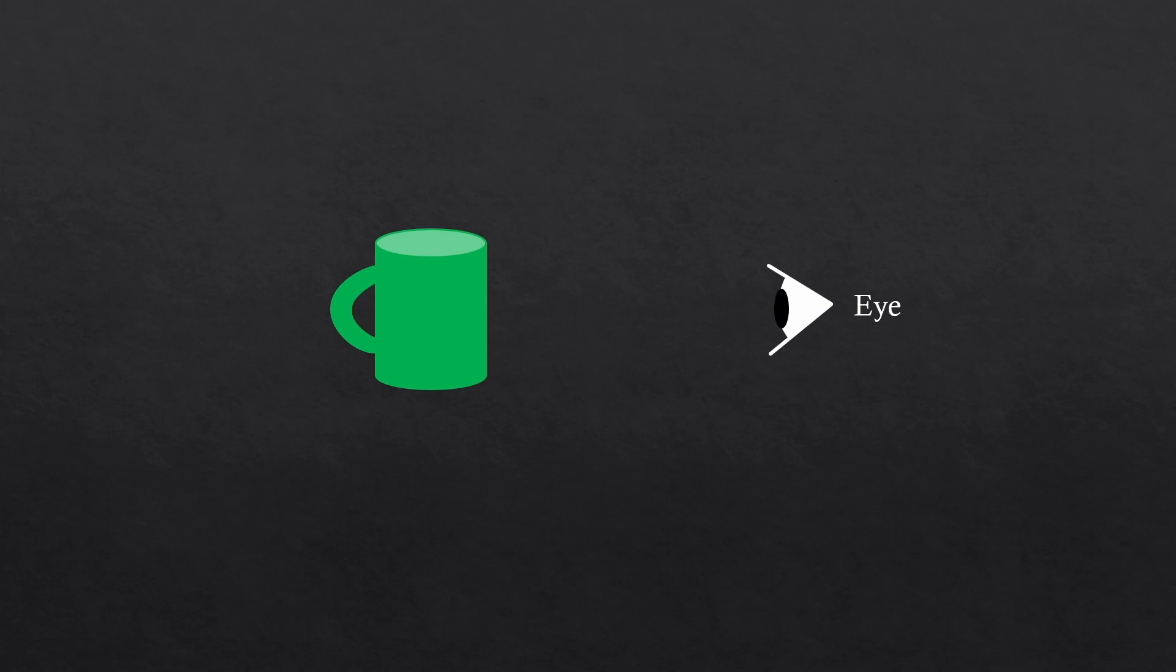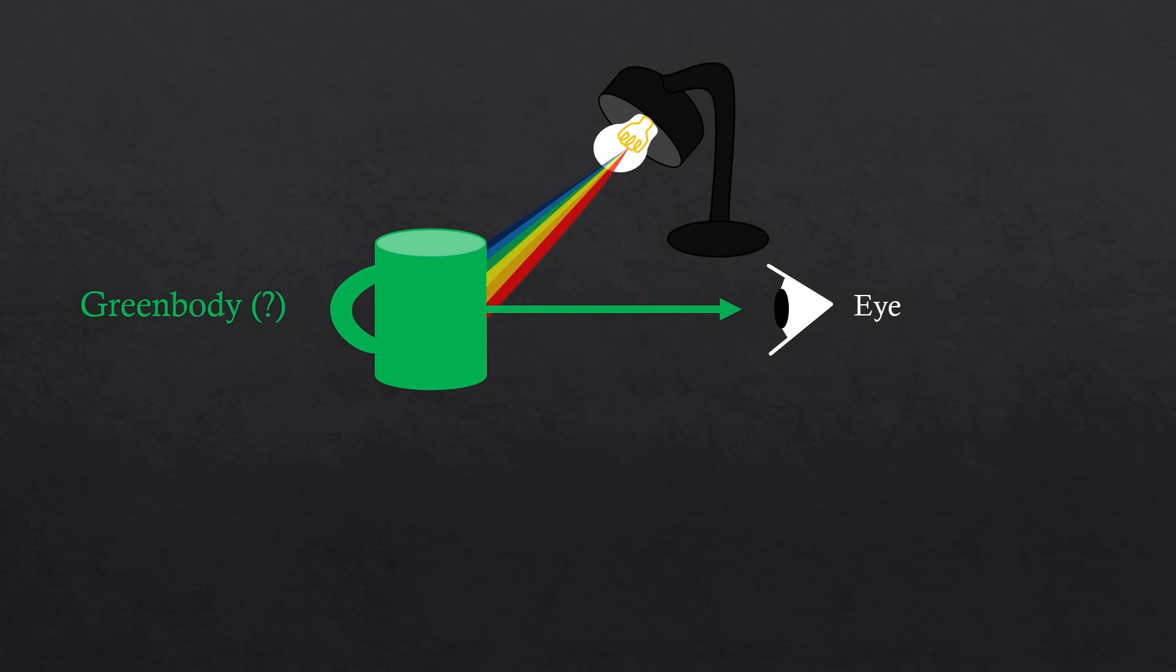But why is the cup green? Is it because the cup emits green light towards you? Probably not, right? Probably because there's another light source that shines at the cup and only green light happens to reflect off the surface of the cup effectively and reaches our eyes. This is just a reflection. This shouldn't be called a green body, but a green reflecting body.